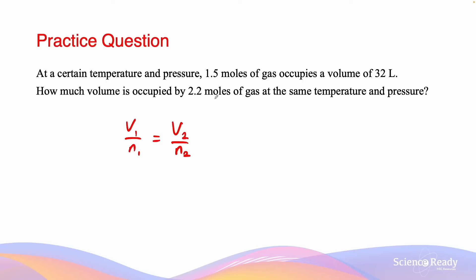In this case, the number of moles has changed from 1.5 moles to 2.2 moles, and the initial volume is 32 liters, and we are trying to find the final volume. So we substitute our values in: 32 divided by 1.5 equals to V2 divided by 2.2. So if we multiply both sides by 2.2, we'll get the value for V2. So 2.2 times 32 on 1.5 gives us a final value of 47 liters, and that's giving our answer to two significant figures.